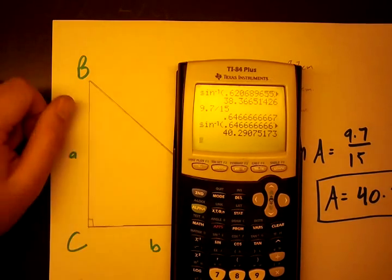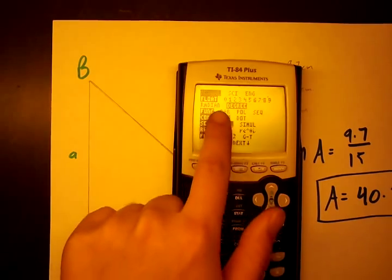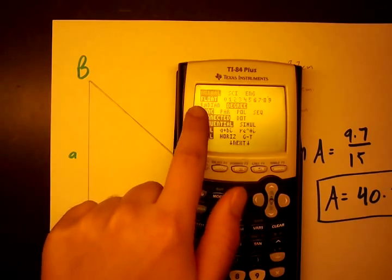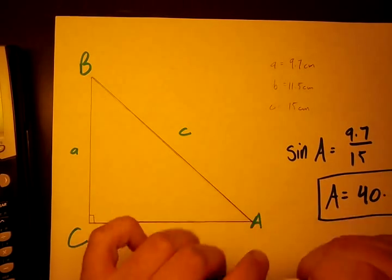And make sure your calculator is in degrees mode. You do that by clicking the mode button and making sure that it is selected on degrees and not radians. So according to our sine function, A equals 40.3 degrees.